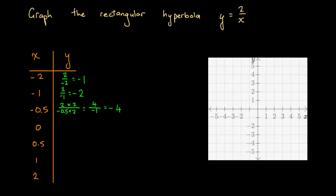OK, so here we've got x equals 0. At x equals 0, we've got y equals 2 over 0. Now, I've got a bit of a problem here, because as you might remember, anything divided by 0 is undefined.